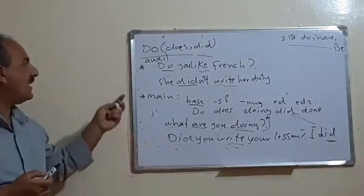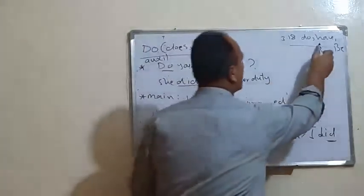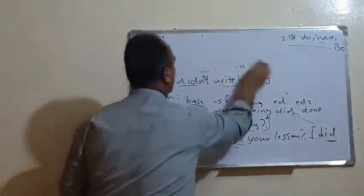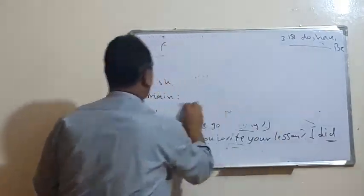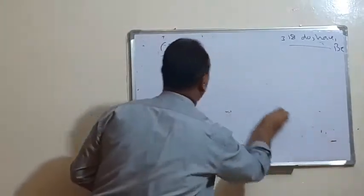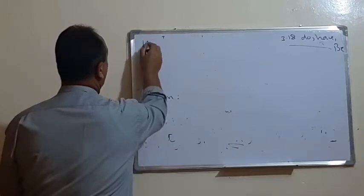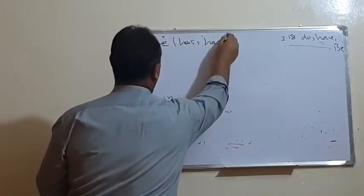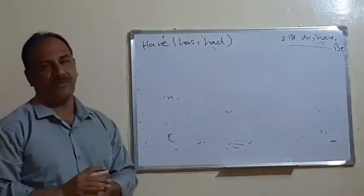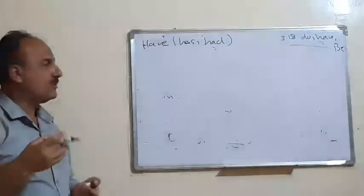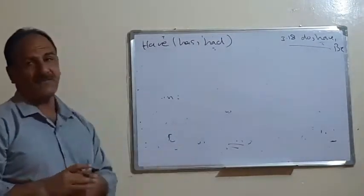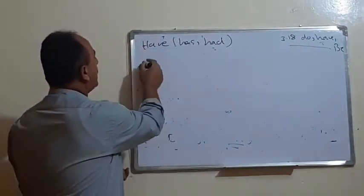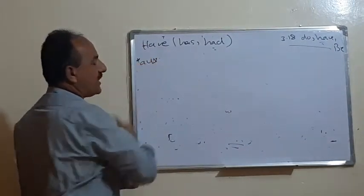The second auxiliary is 'have'. The verb 'have' also has three main forms: 'have', 'has', and 'had'. 'Have' and 'has' are present forms — 'have' is used with I, you, we, and plural subjects, while 'has' is used for the third person singular. 'Had' is the past form. Just like 'do', 'have' can also be used as an auxiliary verb.